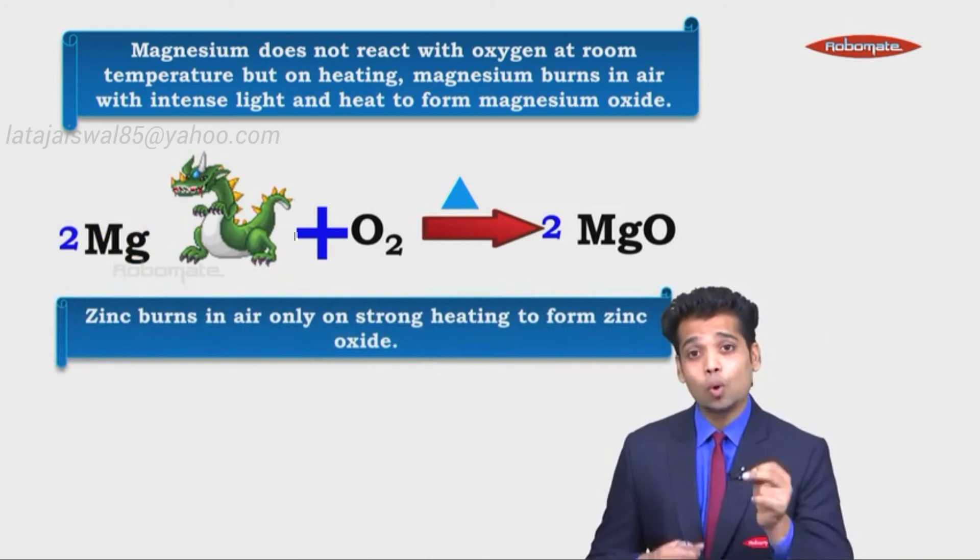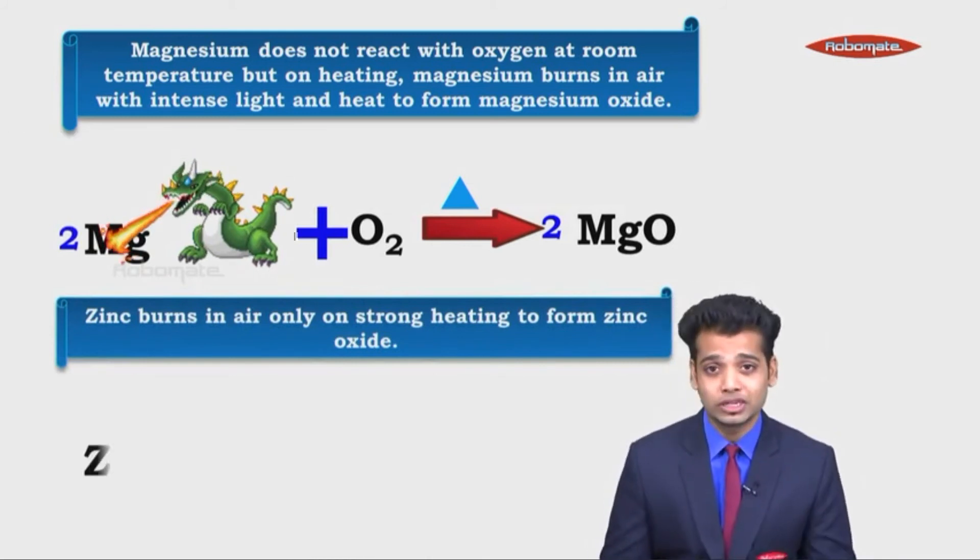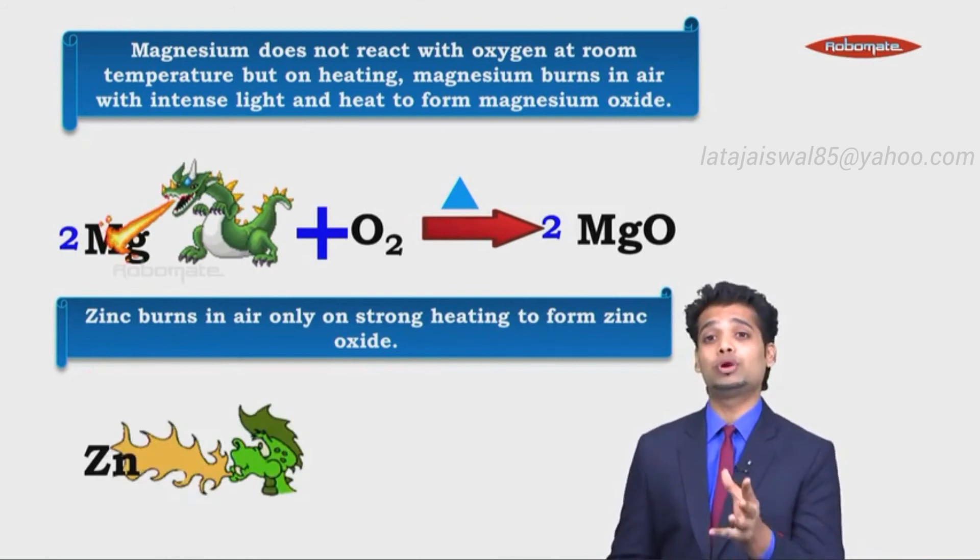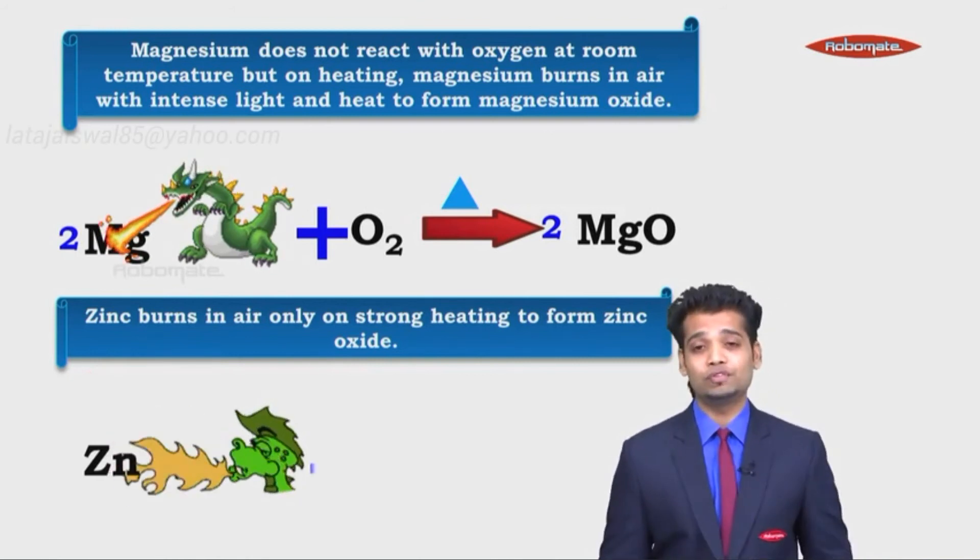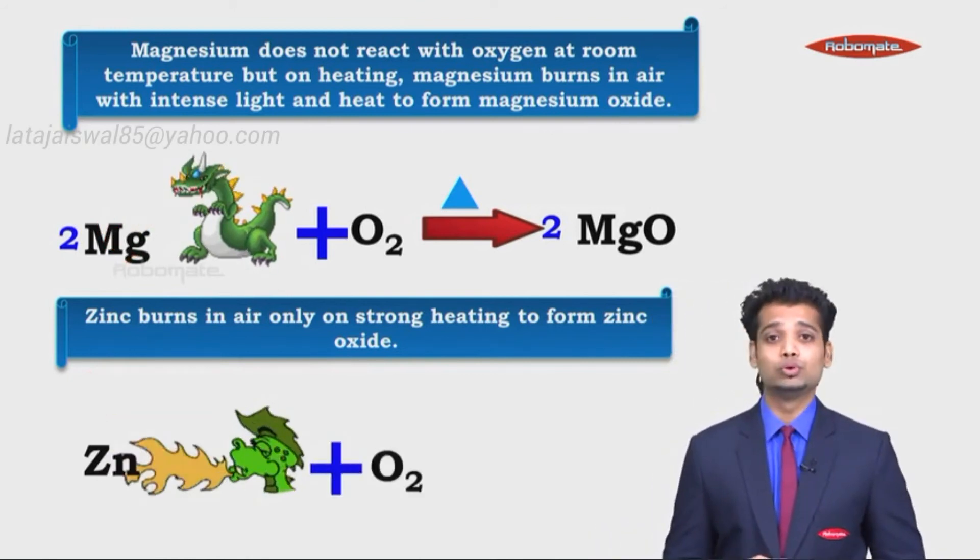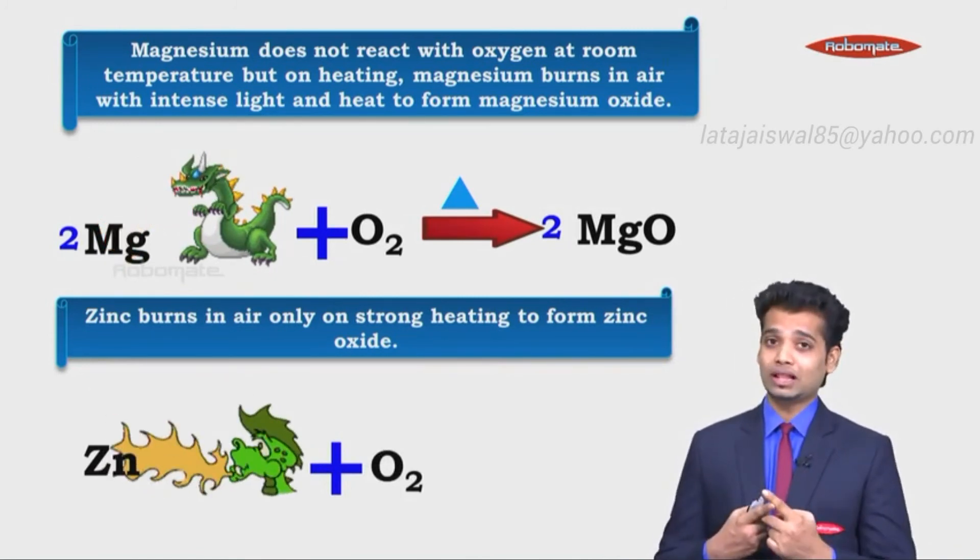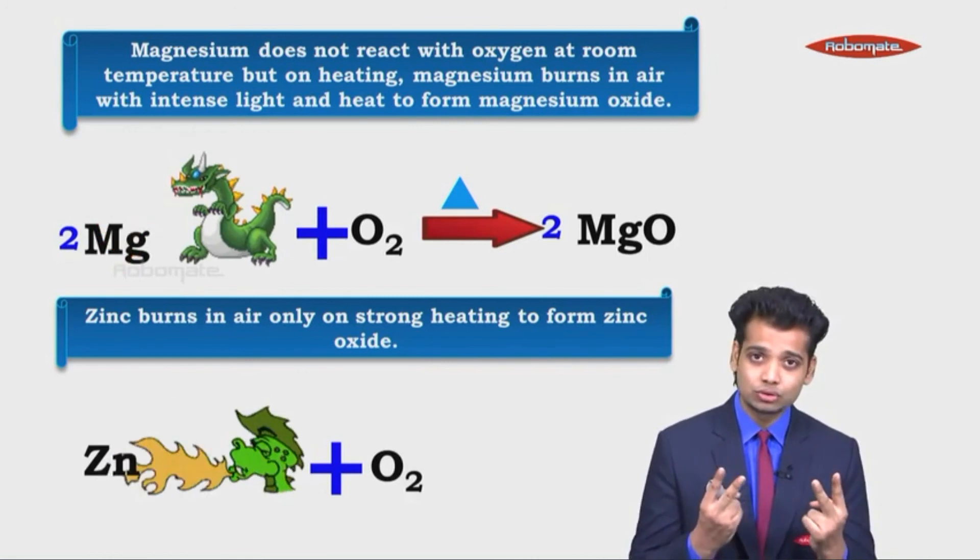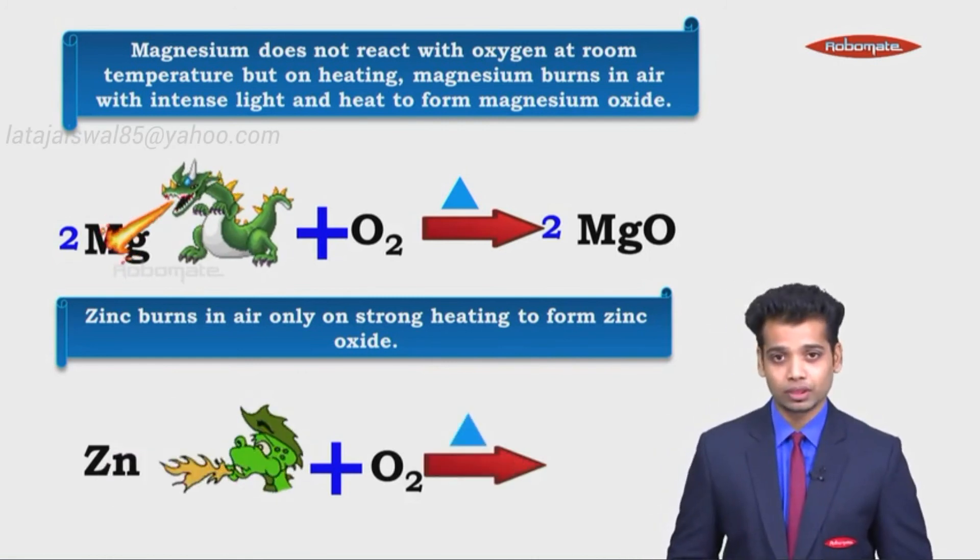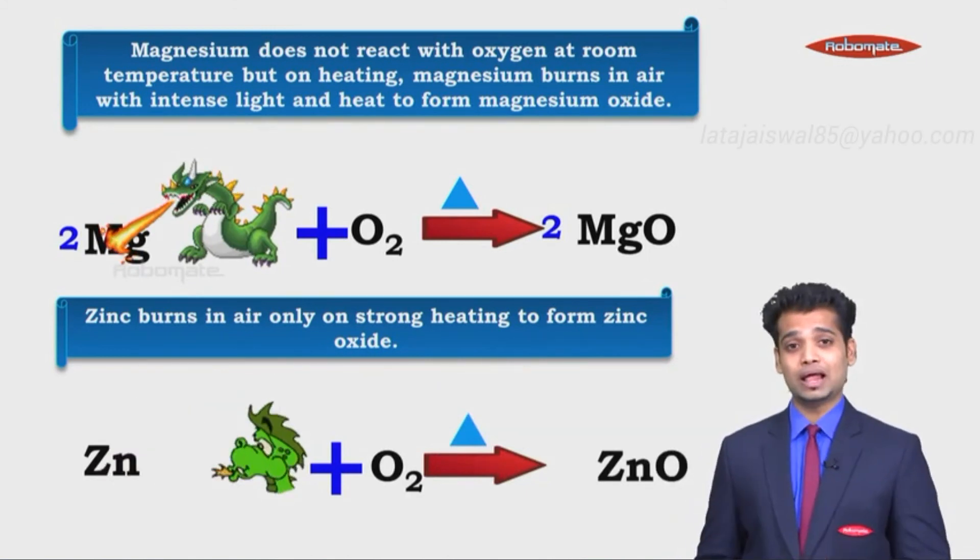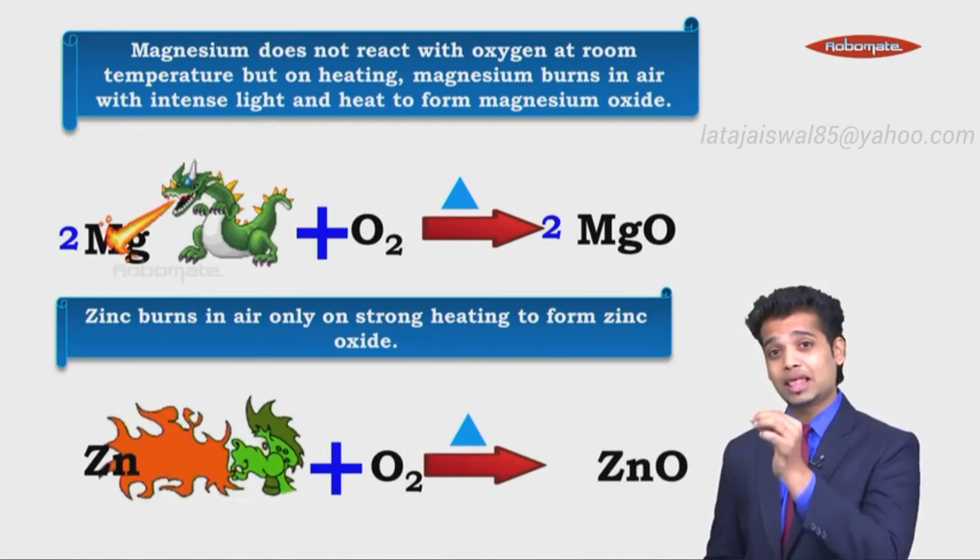So Zn when reacts with O2 requires much more heat, and a larger amount of heat reacts with O2 to give me again ZnO. Why? Because zinc valency is 2, O valency is 2. Cross, cross is ZnO. When you heat it, it will form zinc oxide. If you see the balancing, it is going to be same like MgO.